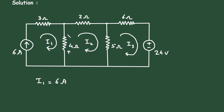According to the direction of current I2, this will be positive here, negative here, positive here, negative here, positive here and negative here. According to the direction of current I3, positive here, negative here, positive here and negative here.